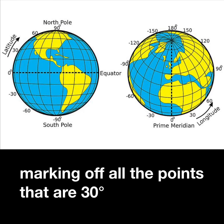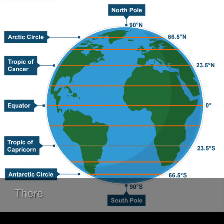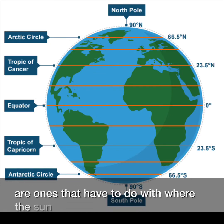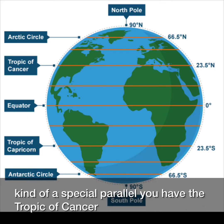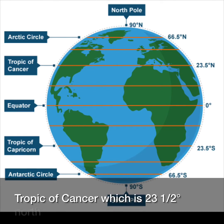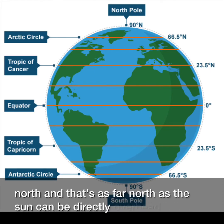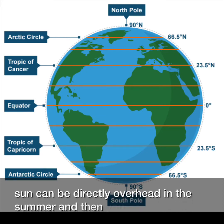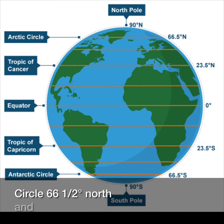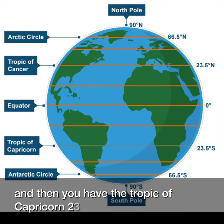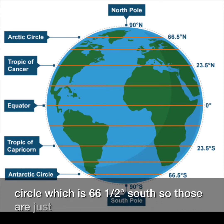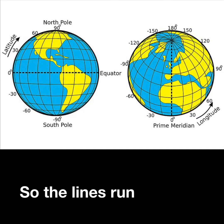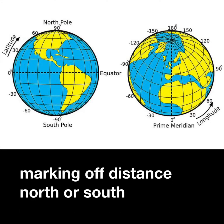Just like the 30th parallel marks off all the points that are 30 degrees from the equator. There are also several special parallels related to where the sun is at various times of year. In addition to the equator, you have the Tropic of Cancer at 23.5 degrees north, the Arctic Circle at 66.5 degrees north, the Tropic of Capricorn at 23.5 degrees south, and the Antarctic Circle at 66.5 degrees south.